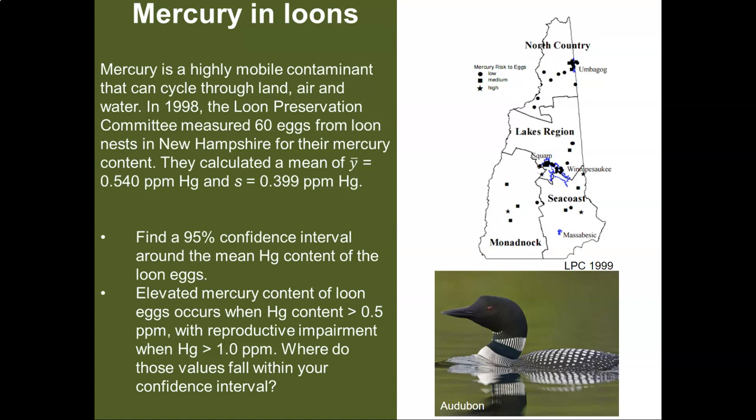So we're going to walk through a couple of exercises where we calculate a 95% confidence interval around the mean mercury content of the loon eggs. And so we know the mean from the sample was 0.540. Let's calculate a confidence interval for that.